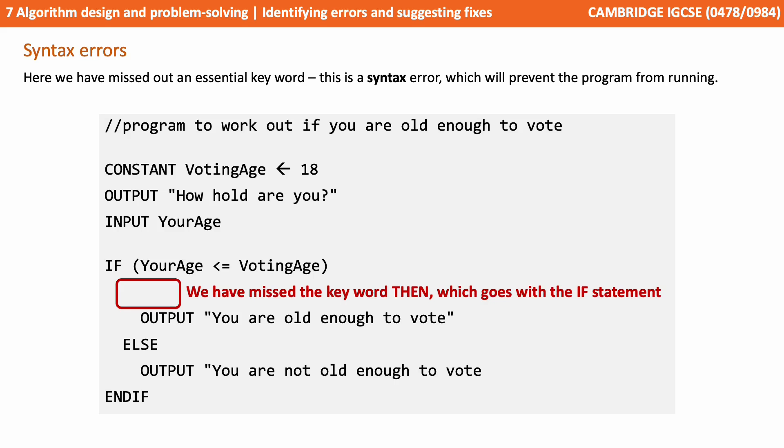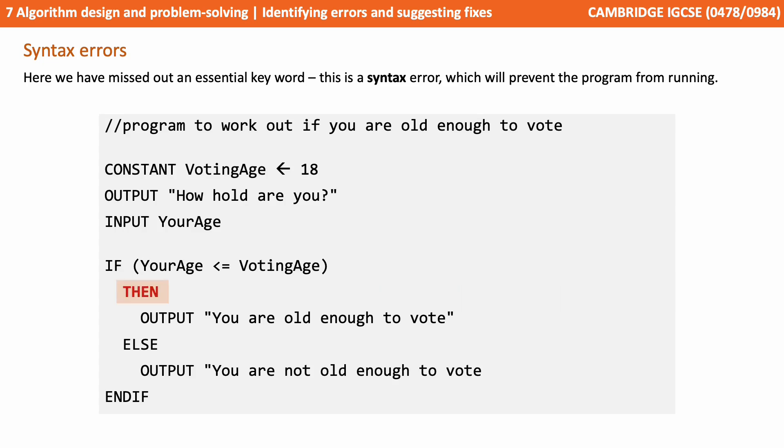You can see here we've missed a keyword out. Keywords are essential. An 'if' should come with a 'then' — we've missed the 'then' out. That's a syntax error and it'll prevent the program from running. We simply add the 'then' keyword in the correct place.